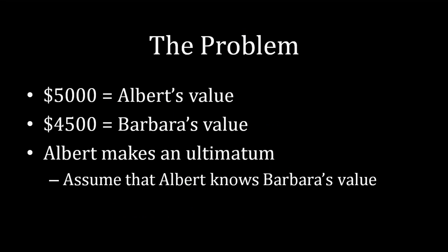We need to make one other assumption: Albert knows Barbara's value for the vehicle. In other words, Albert knows exactly how much he needs to pay Barbara in order for Barbara to prefer taking the cash over keeping the vehicle. No doubt about it, this is a strong assumption. But one of the sources of bargaining power is knowledge — if you know this sort of thing, you're going to be better off than if you do not.